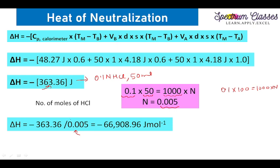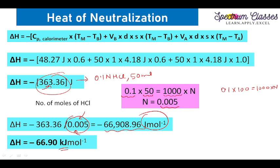Students often get confused about where this mole value comes from, as textbooks mention it directly. On dividing the total energy by the number of moles, we get the heat released per mole in joules. This can then be converted to kilojoules per mole. As mentioned at the start, the standard value is 57.1 kJ/mol.